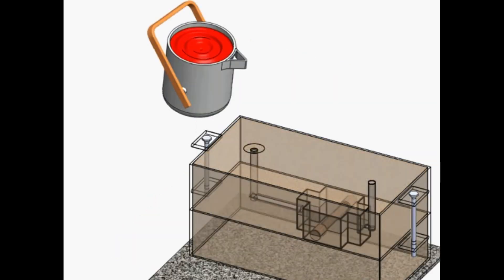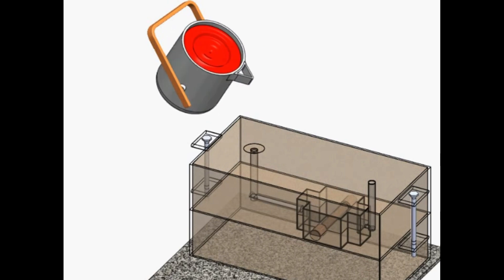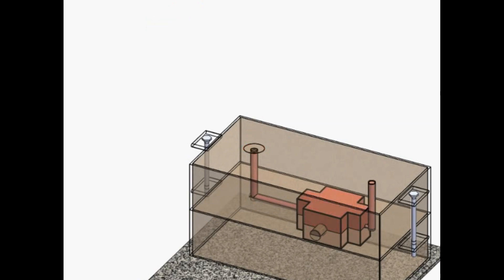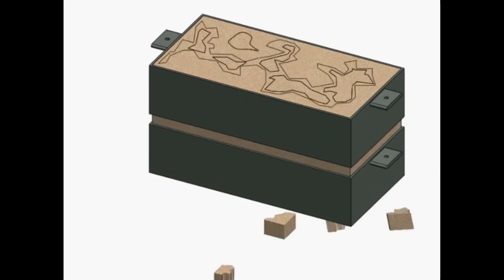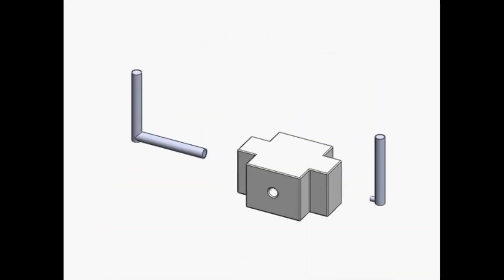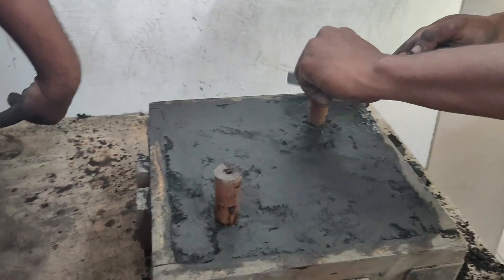Inside the mold cavity, there are two holes: the runner and the riser. We want to pour molten material through the runner continuously until material rises up through the riser and the cavity is completely filled. Then we stop and wait some time for it to cool and solidify.